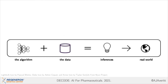Regardless of the task, this is the machine learning pipeline that we're all very familiar with. We have an algorithm which we apply to data. This, in turn, gives us inferences regarding relationships between the features in our data. And then we hope that these inferences are reflective of the real world and can be applied broadly.